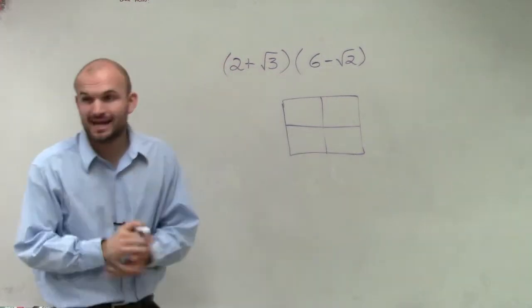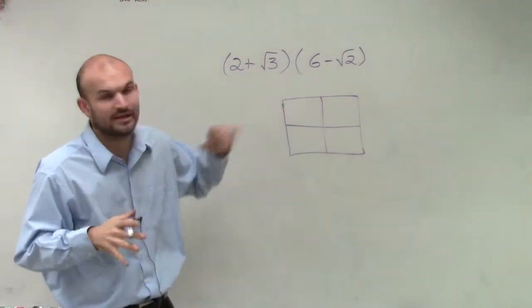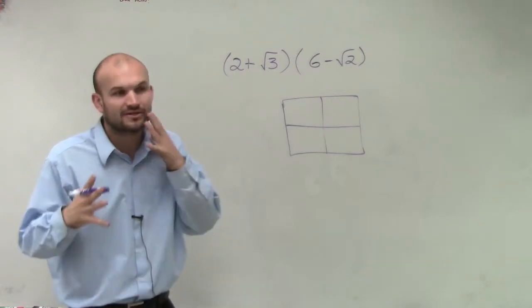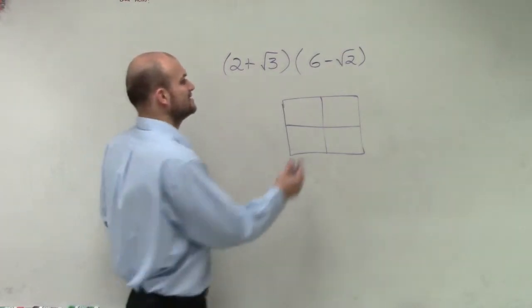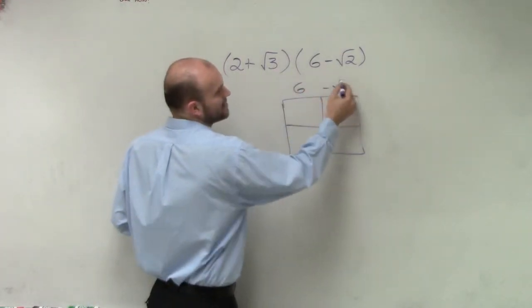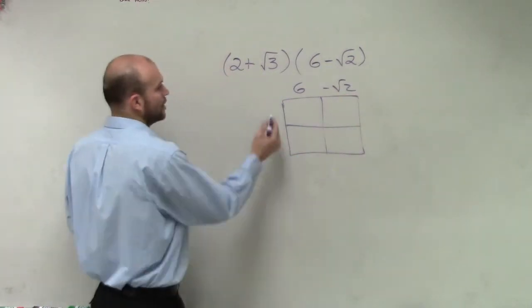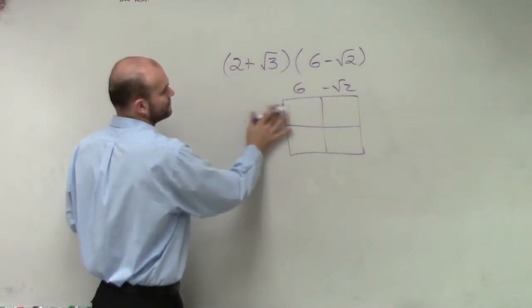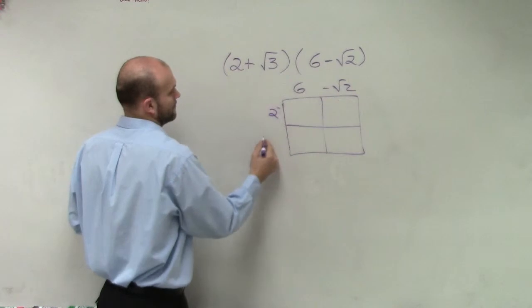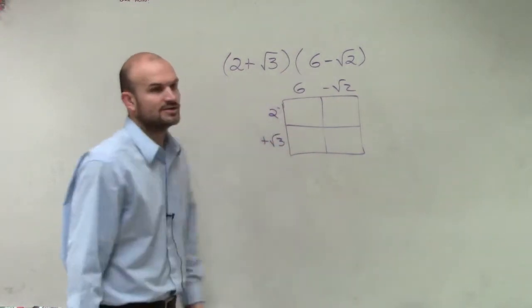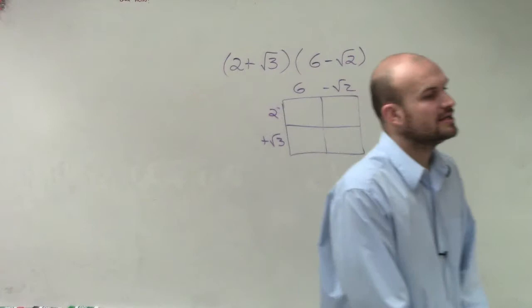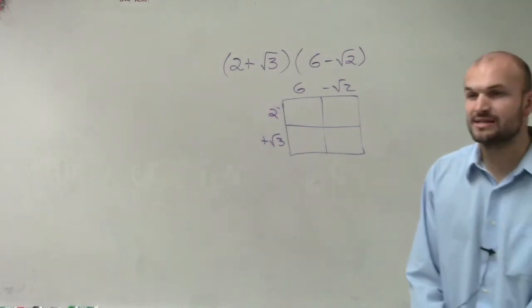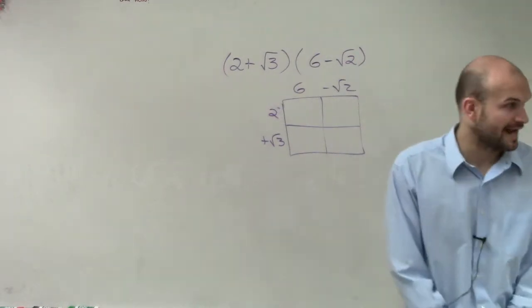I prefer to use the box method because when you're writing your radicals, it's very easy to get things messed up. With the box method, all you do is write one term on one side and one term on the other. Depending on how many terms you have in each parentheses, that's how many boxes you'll have. Since I'm doing a binomial times a binomial, I'll have two sides times two sides.